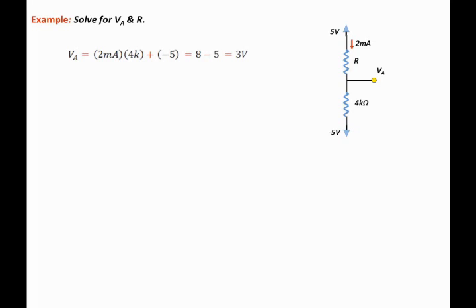Now that we know the value of VA, we know the voltage across the top resistor and we know the current that is flowing through it. Its value is two milliamps.